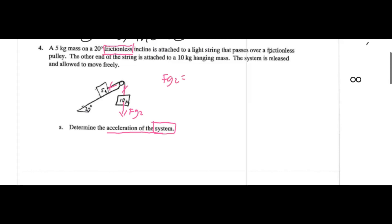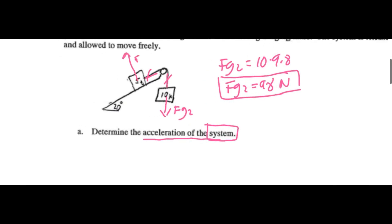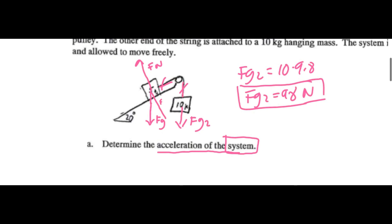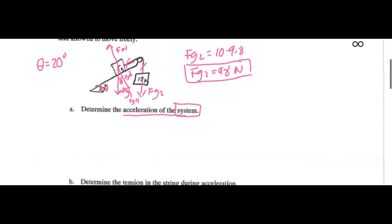FG2 is 10 times 9.8 on Earth, so FG2 is 98 newtons. The other external force is going to be FG parallel. Because this is on an incline, let's draw in Fn — that's the normal force. And then you're going to have FG, and then draw in FG perpendicular and FG parallel. There is a proof here: theta is equal to the angle of the incline, so theta equals 20 degrees.